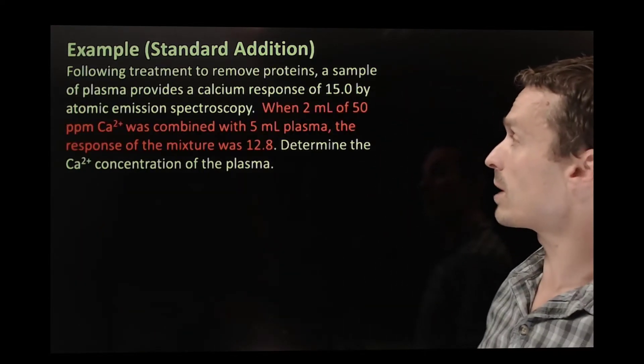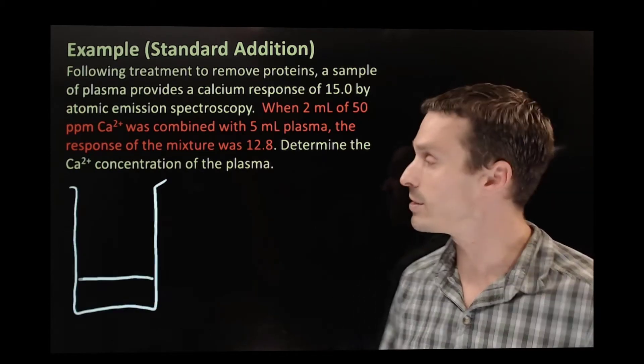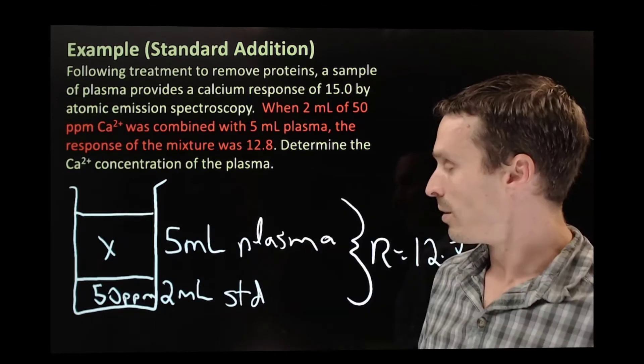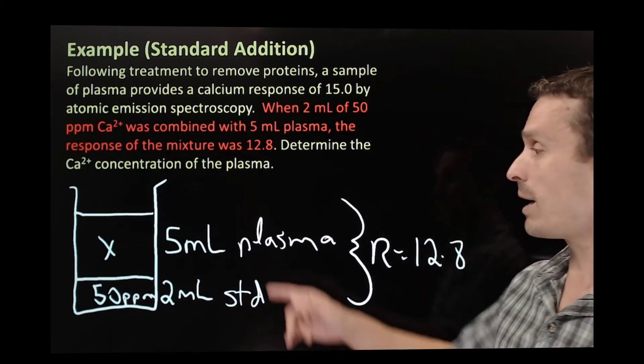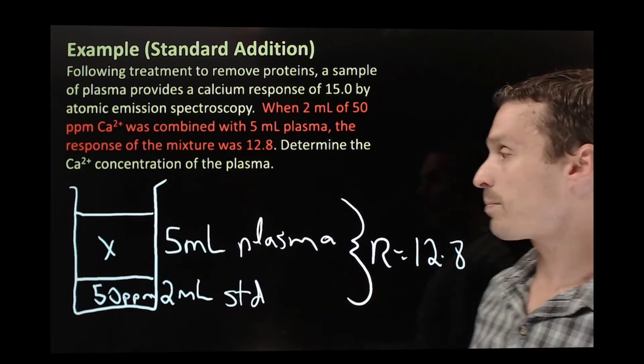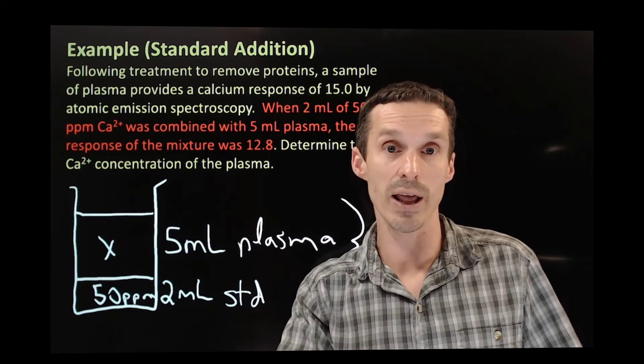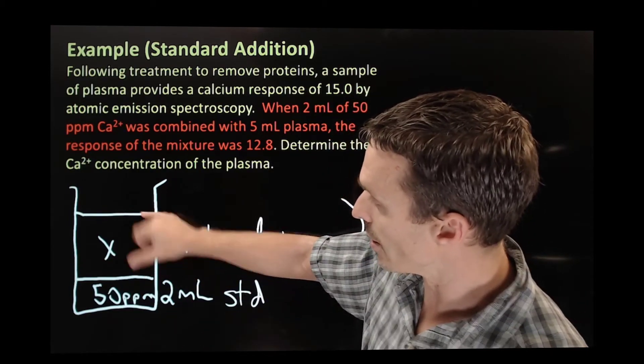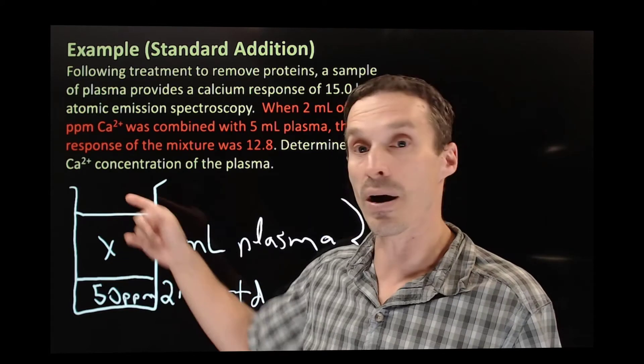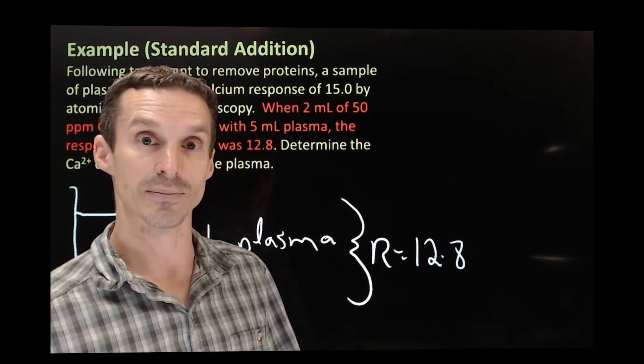Okay. The next part of the problem's got a lot of information going on. So let's draw out a little picture with it. It doesn't need to be fancy, but we're just organizing that information. We have our standard. It's 50 ppm, 2 mils of it, and we combine it with 5 mils of our plasma. The concentration, I just defined it. It's X. I don't know what it is, but I'm saying X is the concentration in here, not in the mixture, just in that part of the mixture. This whole solution gave me a response of 12.8. All right. Let's start putting this together now.